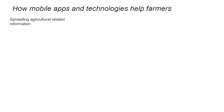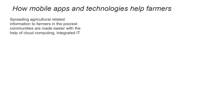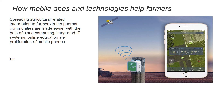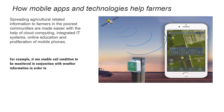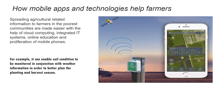Spreading agriculture-related information to farmers in the poorest communities is made easier with the help of cloud computing, integrated IT systems, online education, and the professionalization of mobile phones. For example, it can enable soil conditions to be monitored in conjunction with weather information, in order to better plan the planting and harvest season.